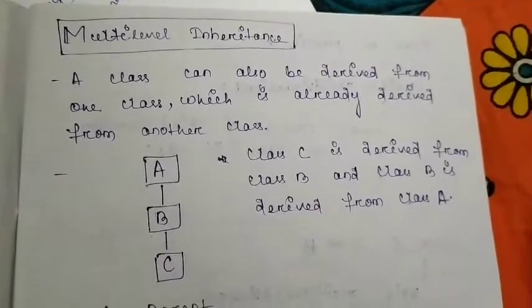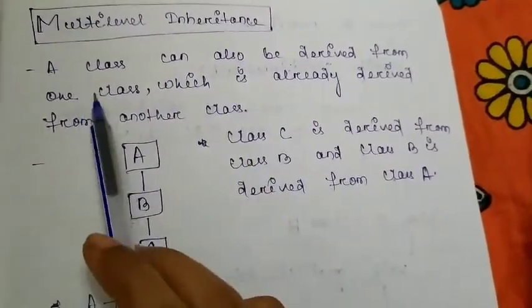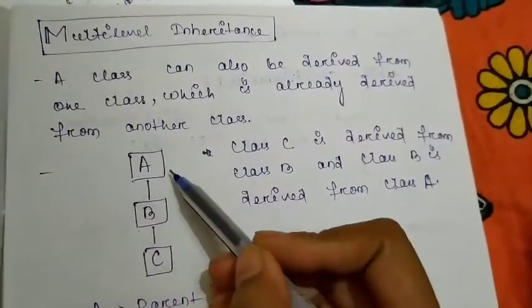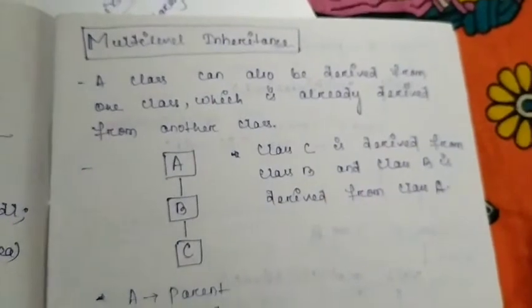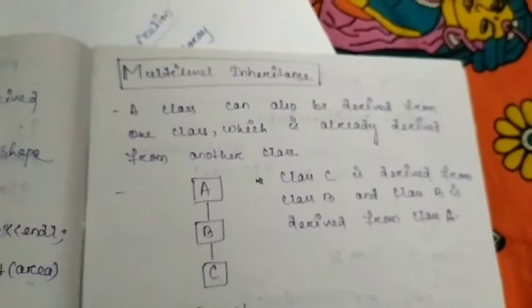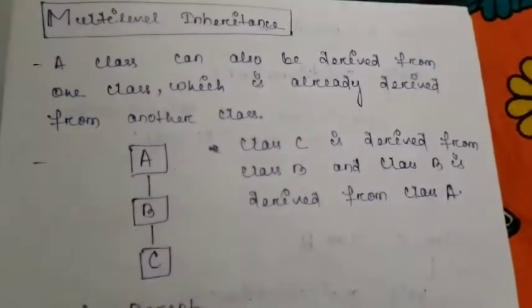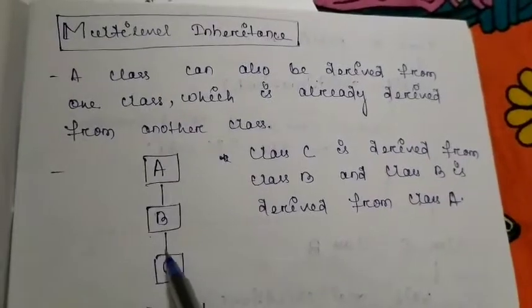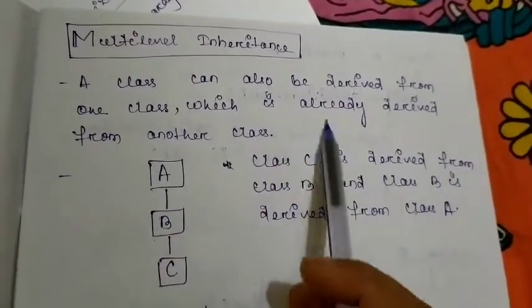Hello students. In this class we will study about multi-level inheritance. Multi-level inheritance means the inheritance technique is performed in more than one level. In previous inheritances we were seeing that there are only two levels — one is your base class and another one is your derived class or subclass. But here we have multiple levels of inheritance, where one type of inheritance leads to another.